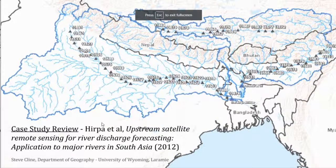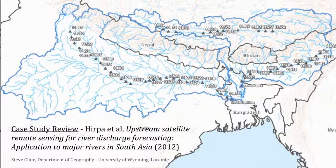Good morning. This is Steve Klein. This is a case study review for remote sensing of rivers. As you can see from the photograph, this case study centers in a different part of the world than we've been focusing on in this class. This is actually about two river systems in South Asia — the Ganges and the Brahmaputra — which both discharge into the Bay of Bengal through Bangladesh. This is an article published in 2012, written by Herpa and others. The title was Upstream Satellite Remote Sensing for River Discharge Forecasting: Application to Major Rivers in South Asia, published in the journal Remote Sensing of the Environment. I'll explain what some of these things in this map mean in a little bit.